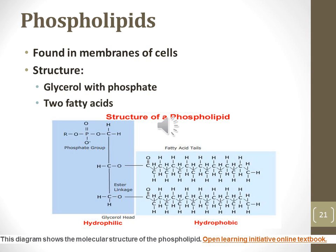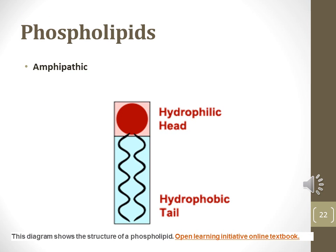Phospholipids are yet another family of lipid found in cellular membranes. Phospholipids contain a glycerol molecule and two fatty acids with a phosphate attached. Amphipathic is the term that refers to a molecule that has both a polar hydrophilic region and a nonpolar hydrophobic region. Phospholipids have a hydrophilic head and a hydrophobic tail. Due to their amphipathic nature, phospholipids arrange themselves in bilayers or micelles. In both arrangements, the hydrophilic head faces the outside aqueous solution while the hydrophobic tail faces inward toward one another away from the aqueous solution.